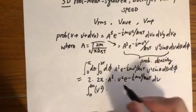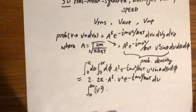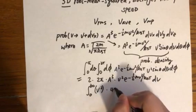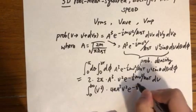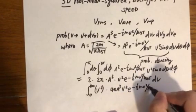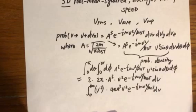And then we're going to copy this probability density function which is four pi A cube V squared e to the power of negative half mv squared over kbT dV.